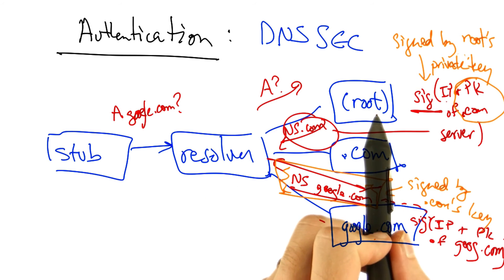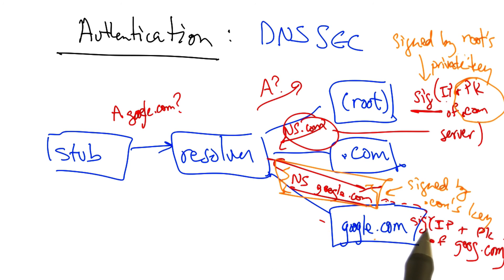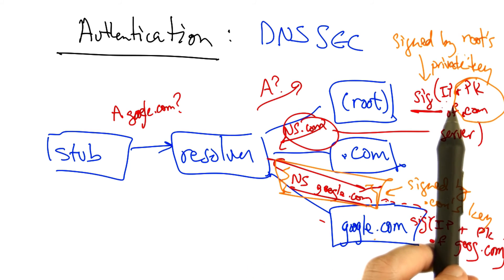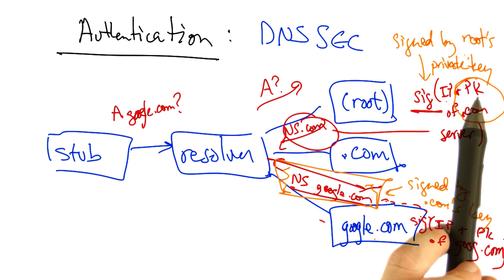In other words, each authoritative name server in the DNS hierarchy returns not only the referral as it would with regular DNS, but also a signature containing the IP address for that referral, and the public key for the authoritative name server that corresponds to that referral.